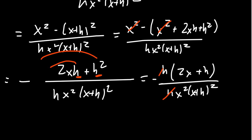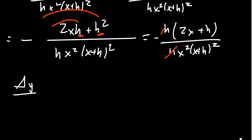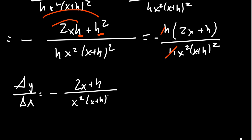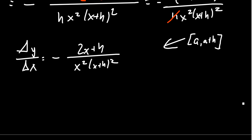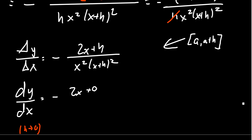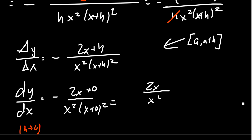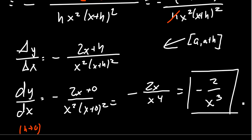We see that the average rate of change is delta y over delta x equals negative (2x + h) over x²(x+h)². This gives a formula for the average rate of change over any interval [a, a+h]. For the instantaneous rate of change — the derivative dy/dx — we set h equal to zero: negative (2x + 0) over x²(x+0)², which simplifies to negative 2x over x⁴, giving us negative 2 over x³ as our instantaneous rate of change.